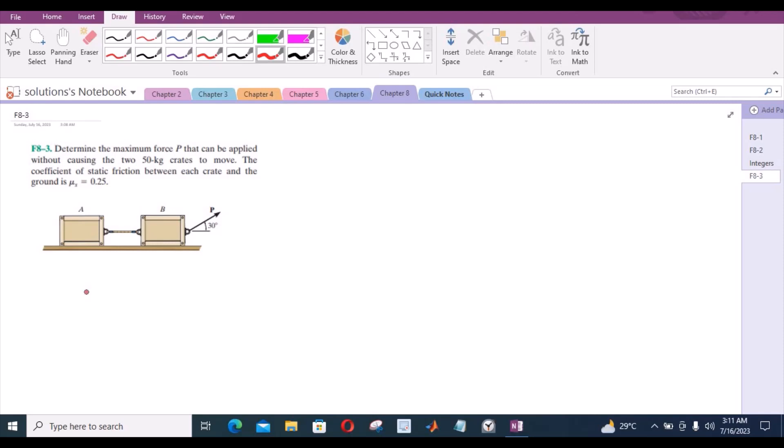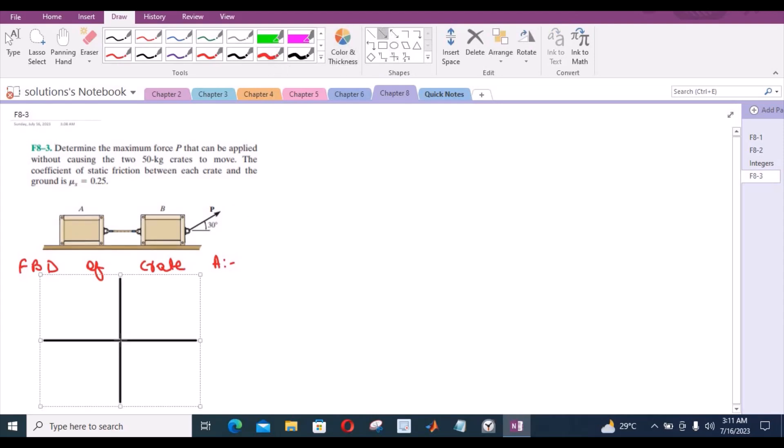To solve this problem, first of all, we will draw the free body diagram of crate A by considering it as a particle. The free body diagram of crate A looks something like this. I have a vertical force acting downwards, a normal reaction from the ground, a tensile force from the string to the right, and a frictional force to the left.